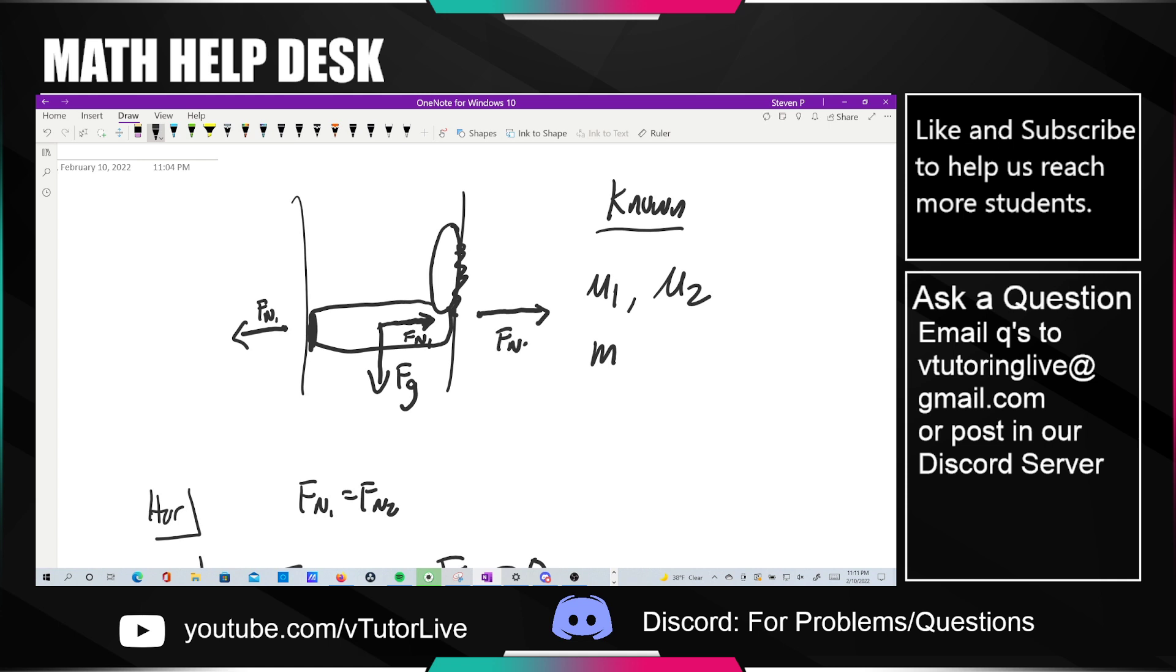By equal and opposite reactions there is going to be an Fn2 on them to the left. To be clear, this force over here is the force she applies to the wall and the force over here is the force she applies to the other wall.